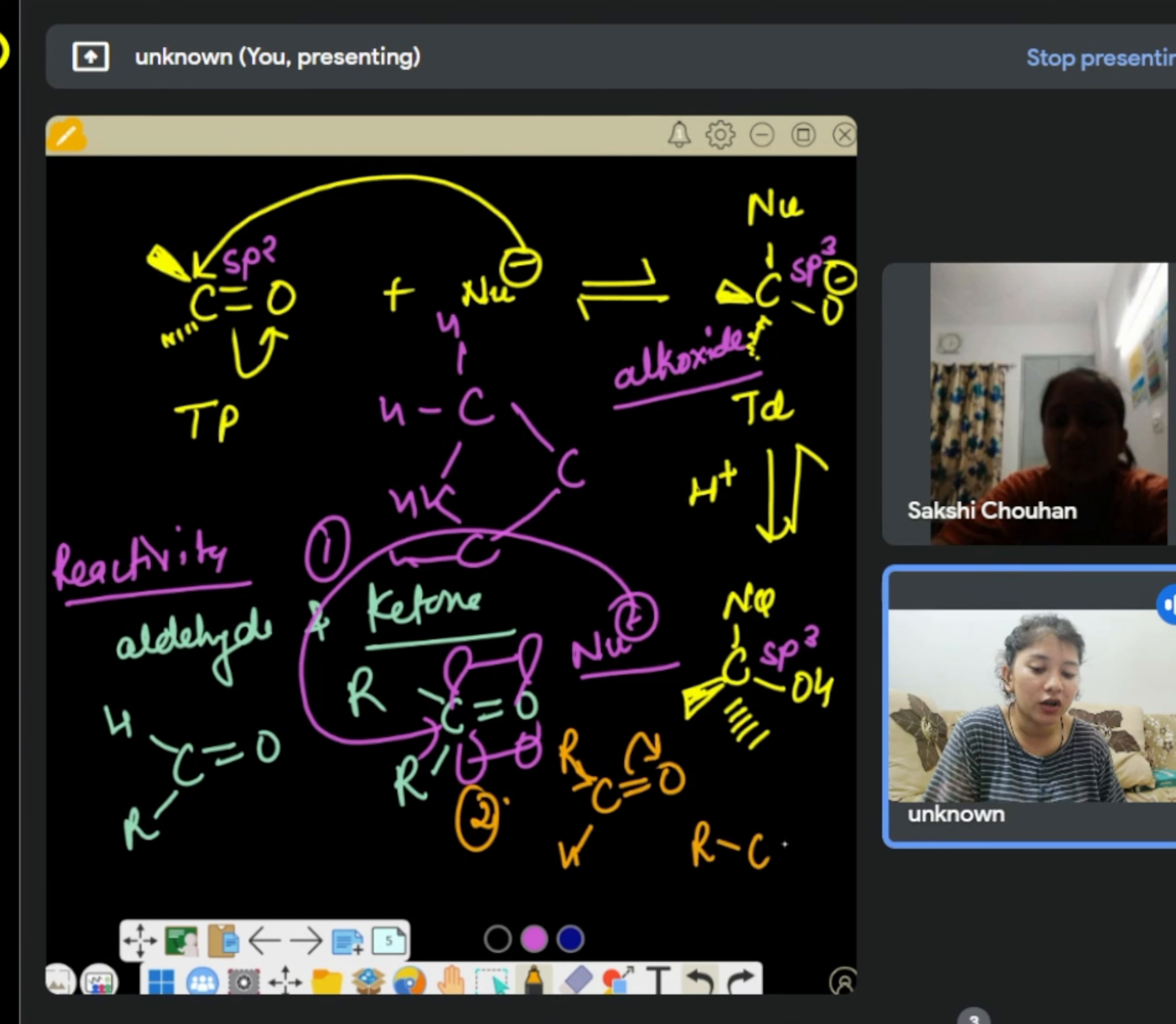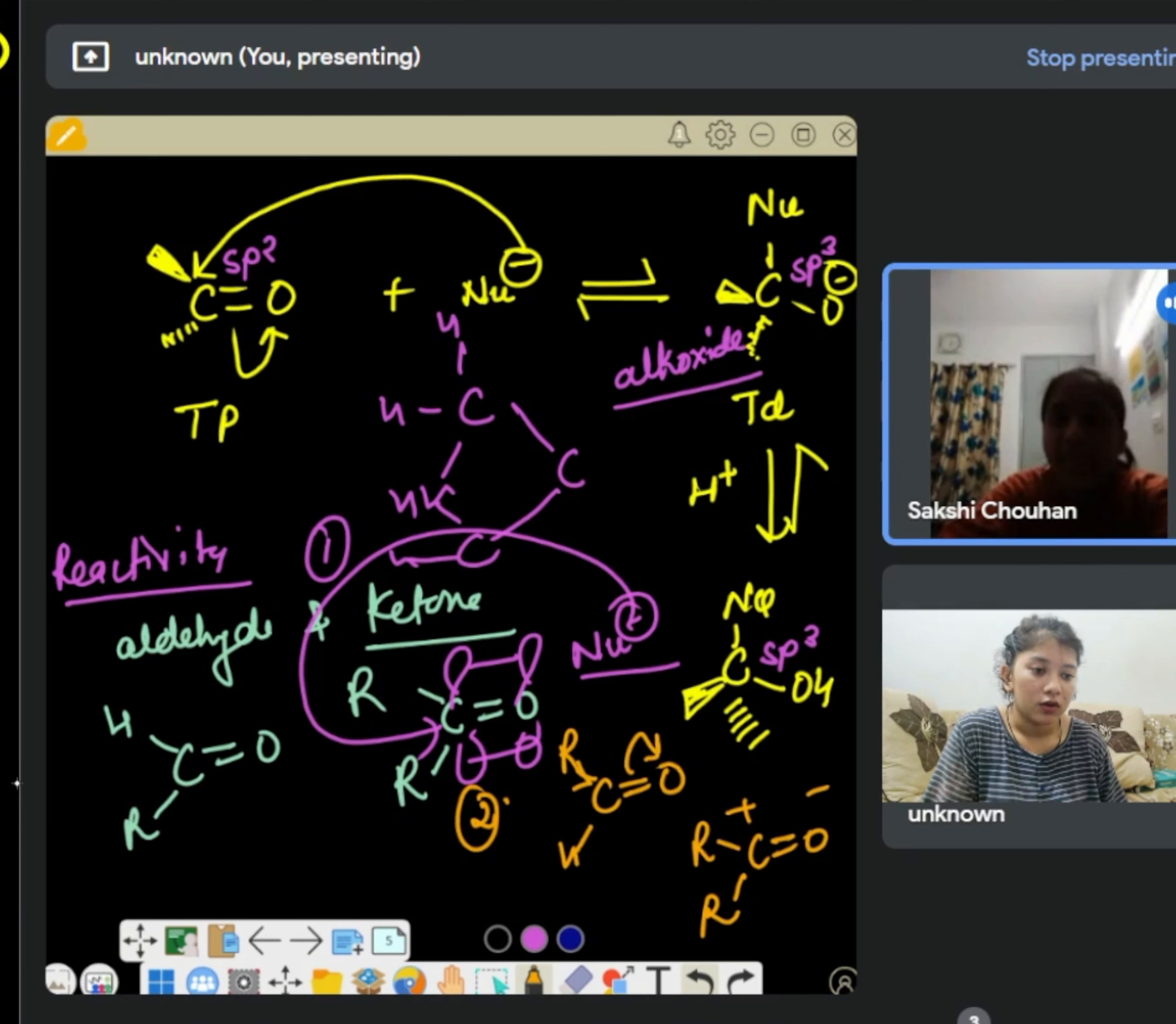And hydrogen is not doing anything different. But in ketone case, in the case of ketone, we have two alkyl groups. Both are electron releasing. So they will neutralize the positive charge.